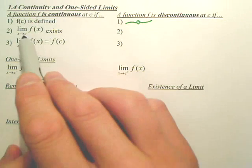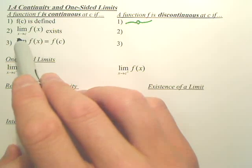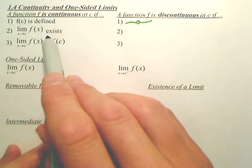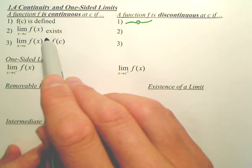The second stipulation. The limit as x approaches C of f of x exists, meaning the limit exists. For it to be continuous, the limit should exist.